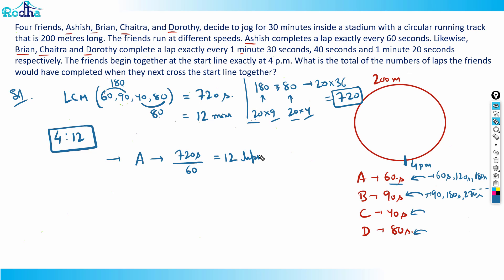B would have completed 720 by 90, that is equal to 8 laps. C would have taken 720 by 40, that is equal to 18 laps.